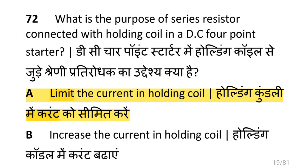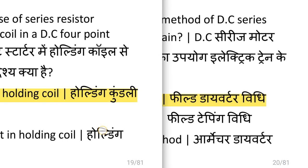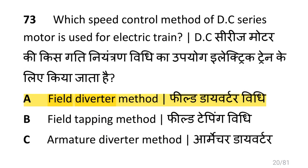What is the purpose of the series resistor connected with holding coil in a DC four point starter? That is to limit the current in the holding coil. Which speed control method of DC series motor is used in electric trains? That is the field diverter method.